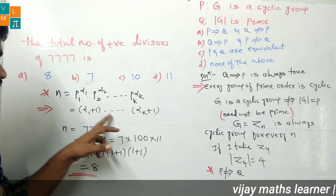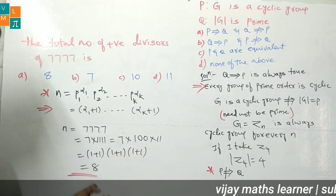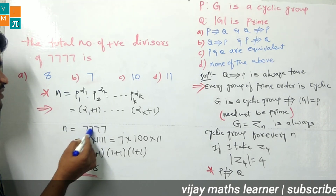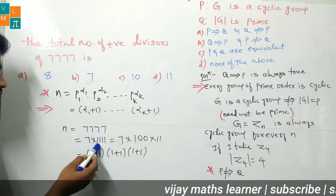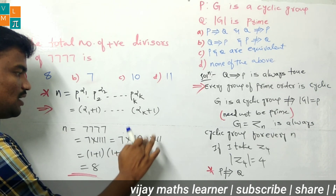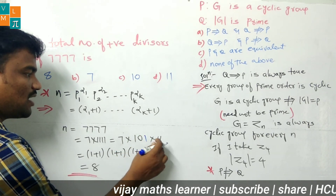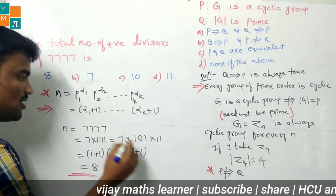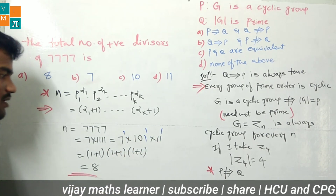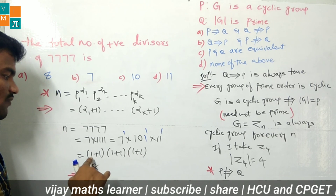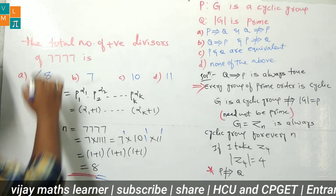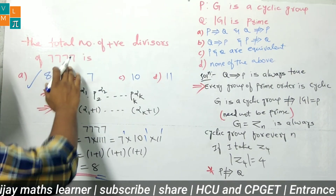Add 1 to each power and multiply them together. For n = 7777, we write 7777 = 7 × 1111 = 7 × 101 × 11. So 7777 = 7¹ × 11¹ × 101¹. Each power is 1, so the number of divisors is (1+1)(1+1)(1+1) = 2 × 2 × 2 = 8.